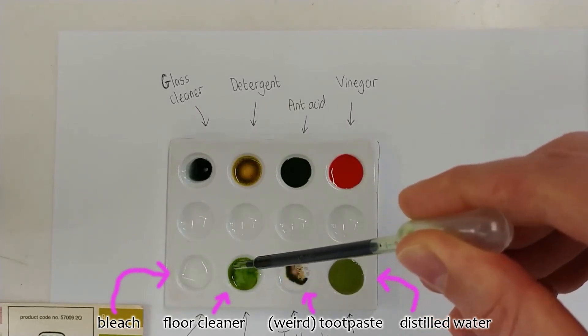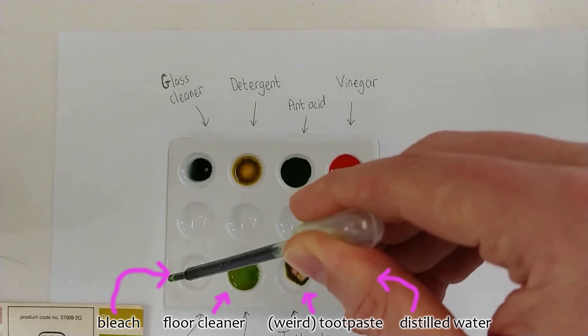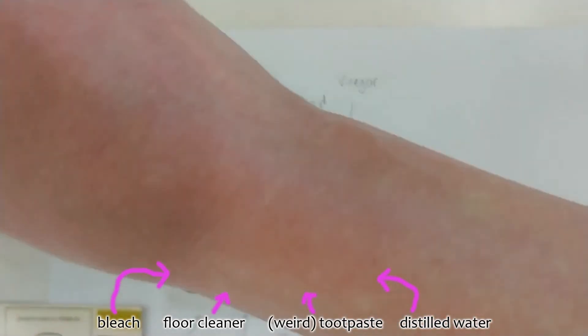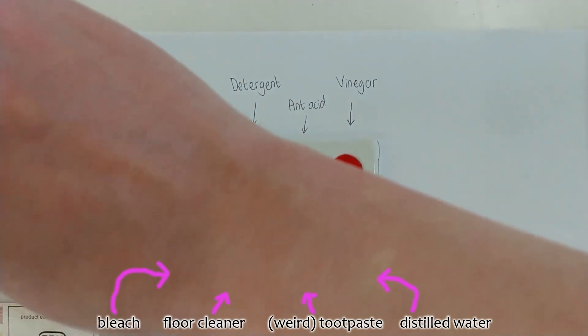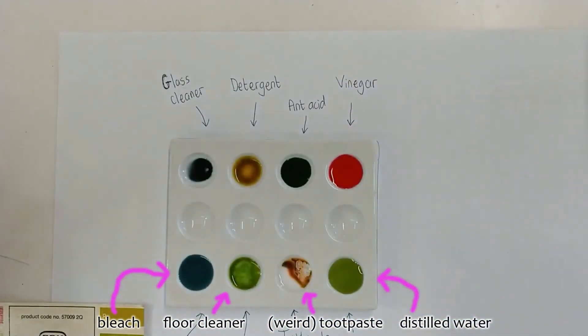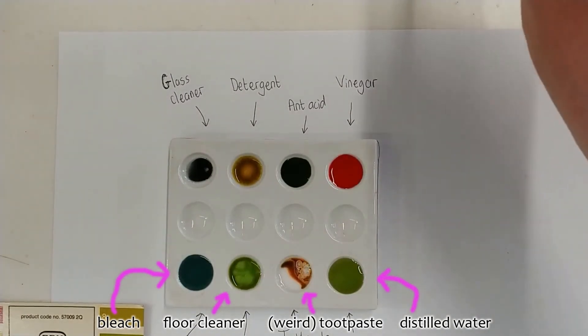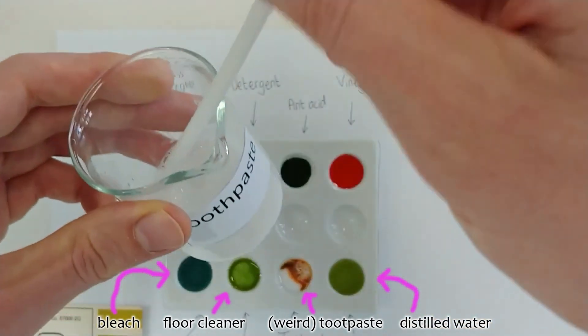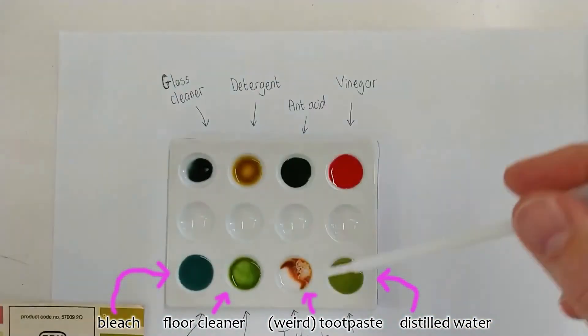As you can see, when it goes into the toothpaste, the color goes black initially, but look - it's going red. And then when it goes into the other two substances, you can see one of them just gives us a green solution and the other one is slightly blue.